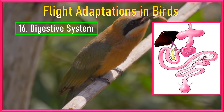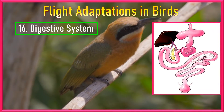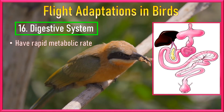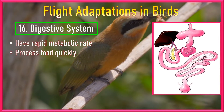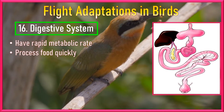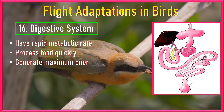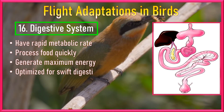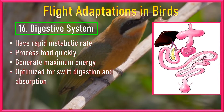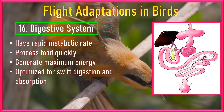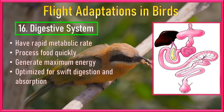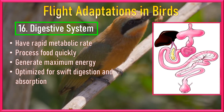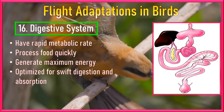Number 16: Digestive System. Birds have a rapid metabolic rate, which means they process food quickly to generate the energy required for flight. Their digestive system is optimized for swift digestion and absorption of nutrients. For details, please watch our video on the digestive system of birds.